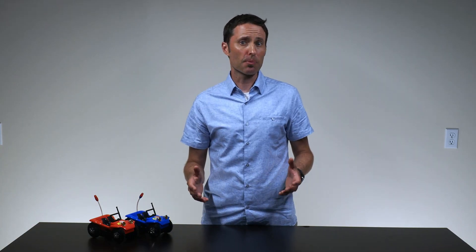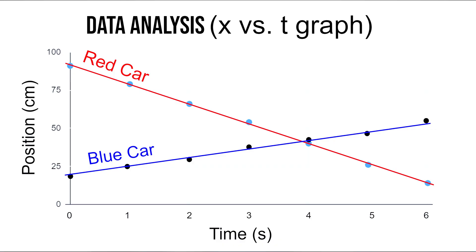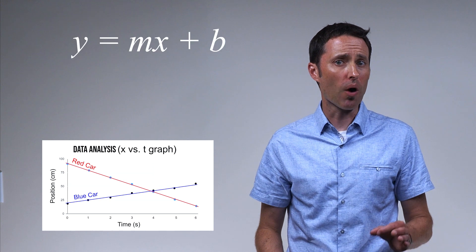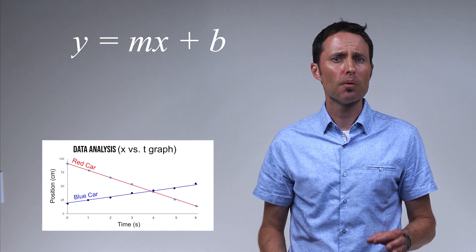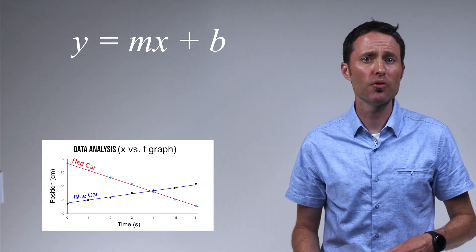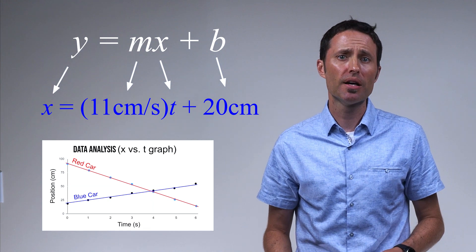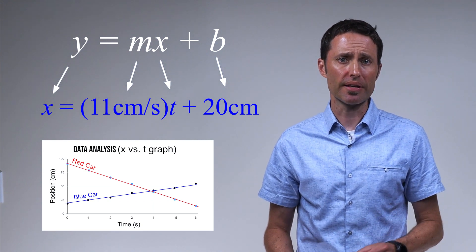To analyze the collected position and time data, have the students graph their data by placing the position values on the y-axis and the time values on the x-axis. Show students how they can write an equation from their graph showing the algebraic relationship between the position and time for their car. Any linear relationship can be written in the form of y = mx + b, but you want your students' equations to include the specific variables and values from the graph of their specific data.